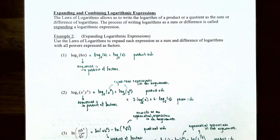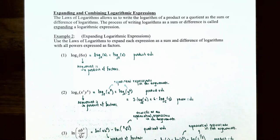In the last example we talked about evaluating logarithmic expressions using the product rule, the quotient rule, and the power rule. Now we're going to talk about how to expand and combine logarithmic expressions. The laws of logarithms allow us to write the logarithm of a product, a quotient, or an exponential expression as a sum or difference of logarithms — this process is called expanding a logarithmic expression.